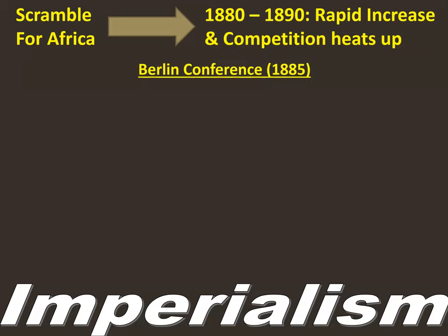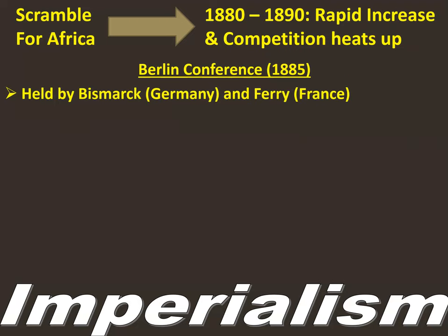The main thing that begins this is what's called the Berlin Conference, and this takes place in 1885. The Berlin Conference is headed by Otto von Bismarck and by the prime minister of France, a guy by the name of Ferry.